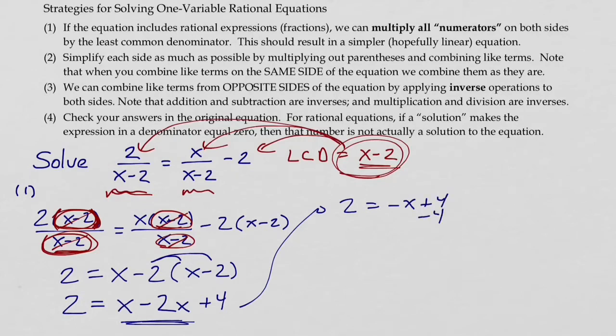So we have two equals negative x plus four. If we subtract four from both sides, I get negative two equals negative x, and then finally dividing both sides by negative one, or multiplying by negative one, changes the negative x into a positive x, and we see x equals two.